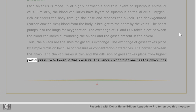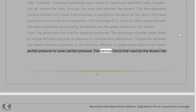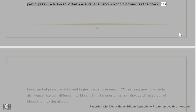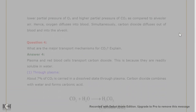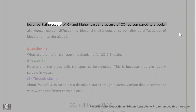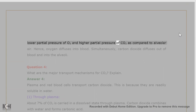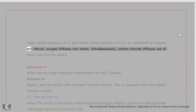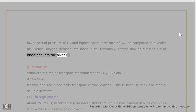The venous blood that reaches the alveoli has lower partial pressure of O2 and higher partial pressure of CO2 compared to alveolar air. Hence, oxygen diffuses into the blood, and simultaneously carbon dioxide diffuses out of the blood and into the alveoli.